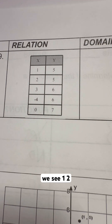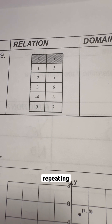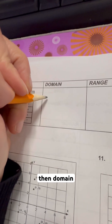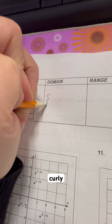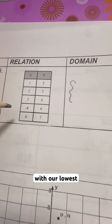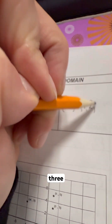Last table, we see x values 1, 2, 3, negative 4, and 0. No repeating x's, so that is a function. Domain in curly brackets, starting with our lowest number: negative 4, then 0, 1, 2, and 3.